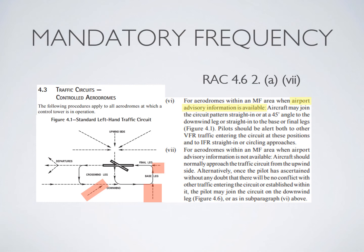You have to broadcast what you're doing and let everyone know your intentions, and you're still responsible for all of your traffic separation, but you're no longer required to always approach from the upwind side. Now, if you're going to an aerodrome like Chilliwack, for example, where there is no airport advisory information and you broadcast all of your intentions to Chilliwack traffic, you should actually be approaching the circuit from the upwind side — as you would at an ATF uncontrolled or any other uncontrolled airport — to make sure you are doing your best to stay separated from all other traffic. There is an exception if you have no doubt there will be any conflict, but in order to be as safe as possible, plan your approach from the dead side, cross midfield to join the downwind, as you would at any other uncontrolled airport.